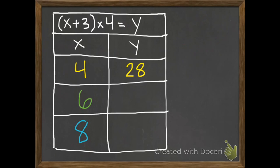Erase that. Now I'm going to put 6 in for x. 6 plus 3 times 4. Parentheses first. 6 plus 3 is 9. 9 times 4 is 36. So when x is 6, y is 36.